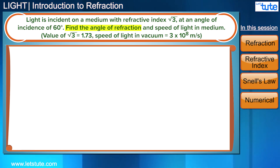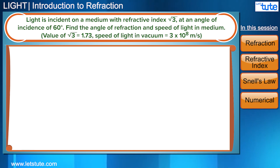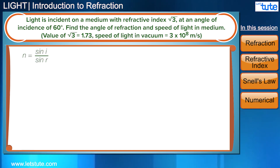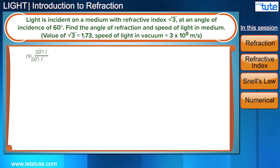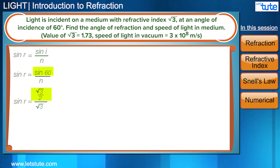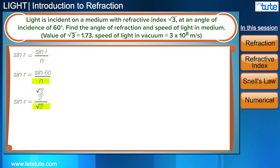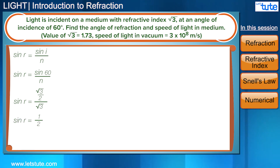We know from Snell's law that the ratio of the sine of the angle of incidence to the sine of the angle of refraction equals the refractive index. So to find the angle of refraction, we switch it with the refractive index in the formula. Now sin 60° is √3/2 and the refractive index is √3. These two cancel to give 1/2, which is equal to sin 30°. Thus the angle of refraction is 30 degrees.